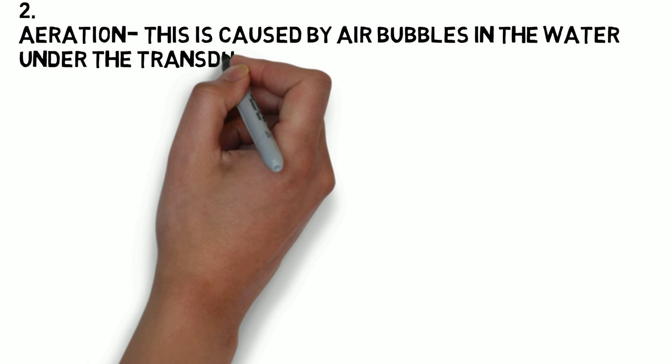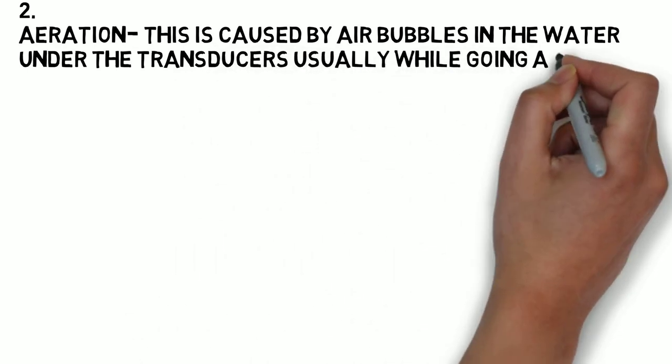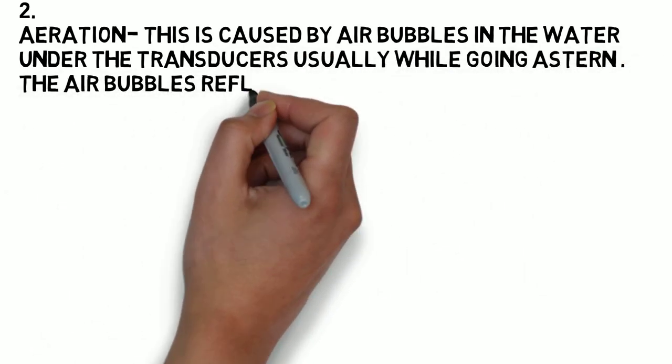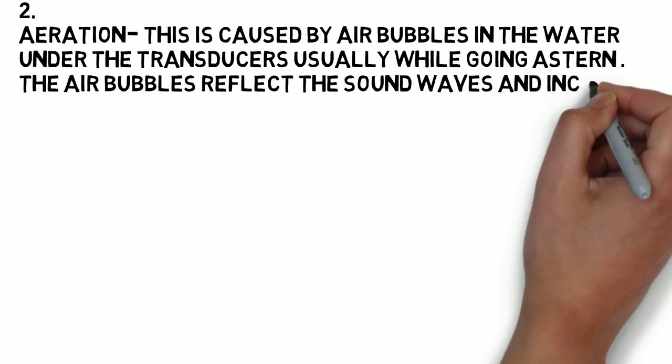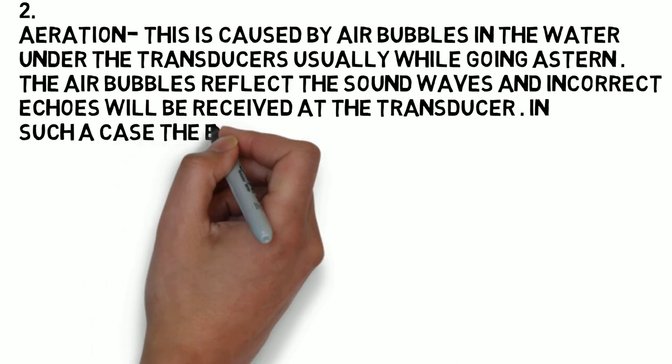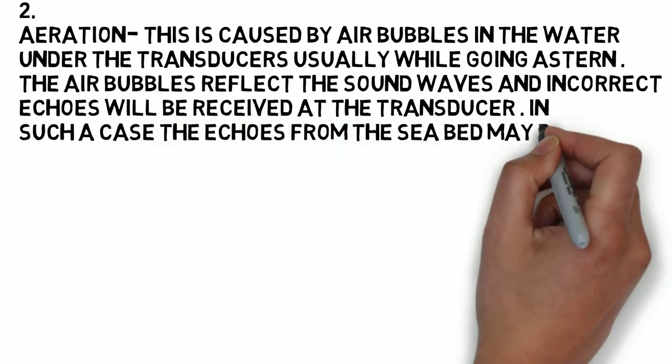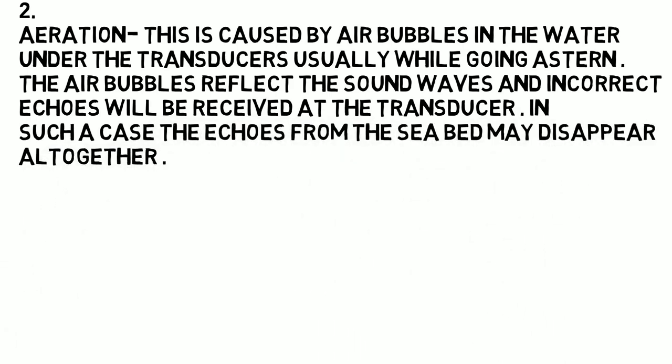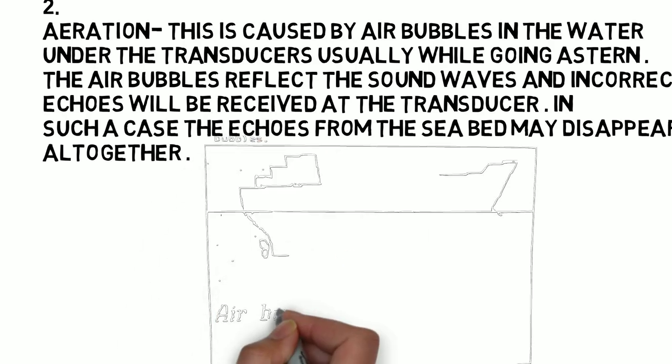Second is the aeration error. This is caused by the air bubbles in the water under the transducer, usually while going astern. The air bubbles reflect the sound waves and incorrect echoes will be received at the transducer. In such a case, the echoes from the seabed may disappear altogether.